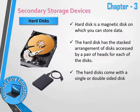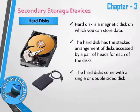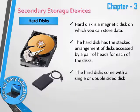Hard disk is a magnetic disk that stores data. There are two heads here. The head reads and writes data, and data is stored in the disk in its designated place.